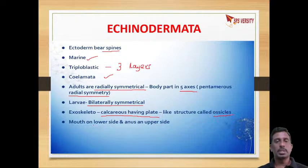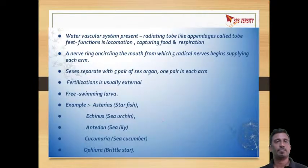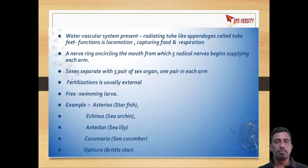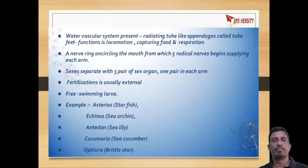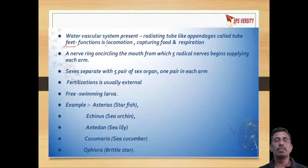The mouth is present on the lower side and the anus is present on the upper side. In Echinodermata there is a water vascular system, which is different from a water canal system. The water vascular system has tube feet which have different functions: locomotion, capturing food, and respiration.